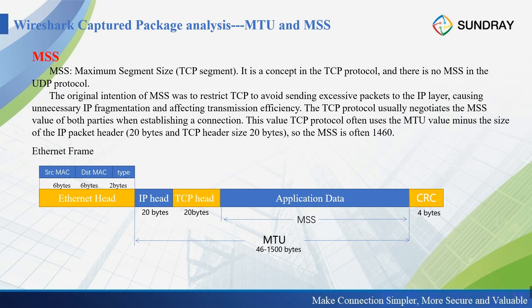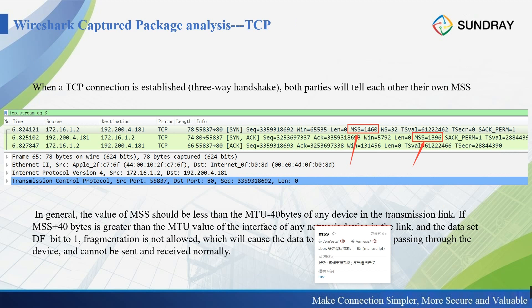Apart from MTU, we also have MSS — Maximum Segment Size — which is only for TCP. TCP requires negotiation between server and client. The typical MSS is 1460 bytes, because the TCP header is 20 bytes and the IP header is 20 bytes; removing these 40 bytes from the 1500-byte MTU gives us 1460. In some cases, depending on terminal configurations or network settings, the MSS may be set to a lower value.